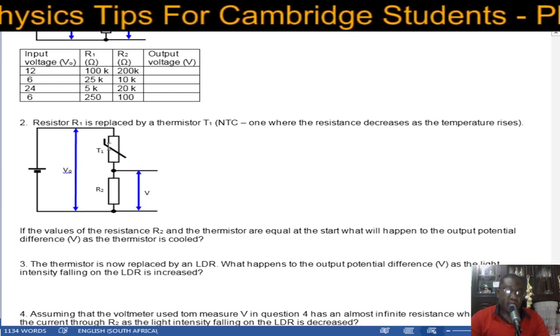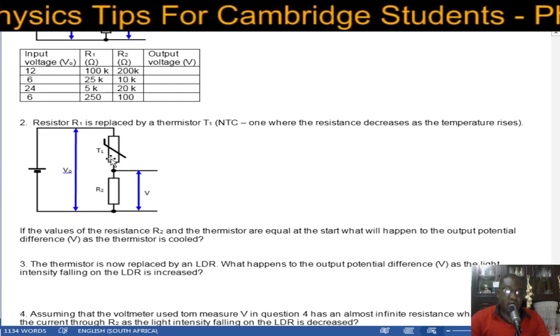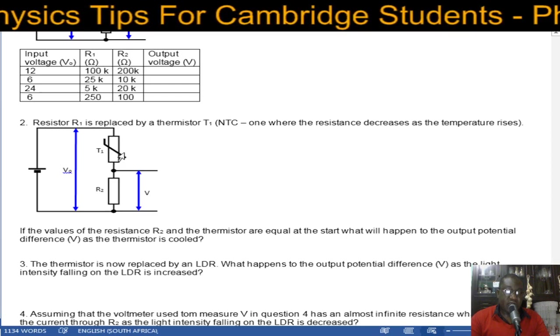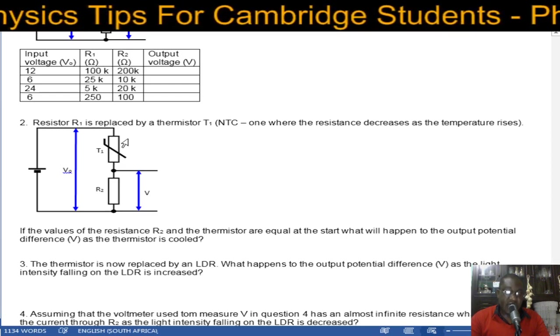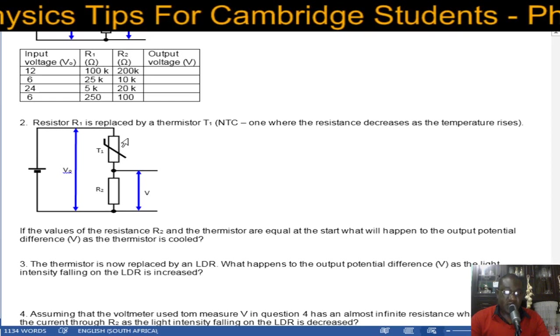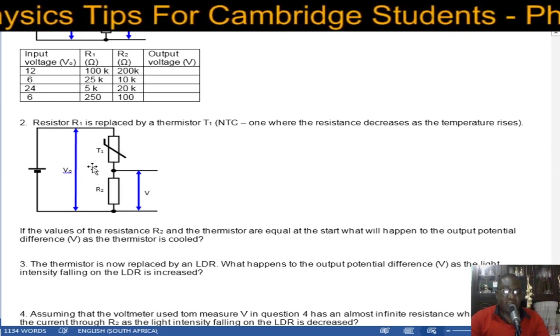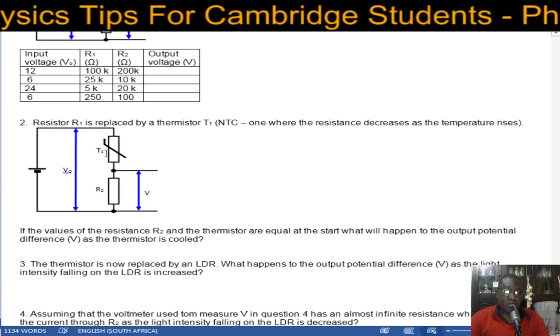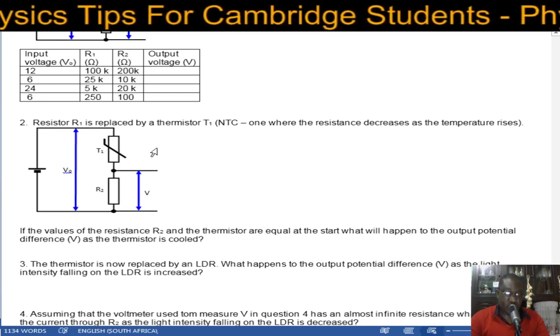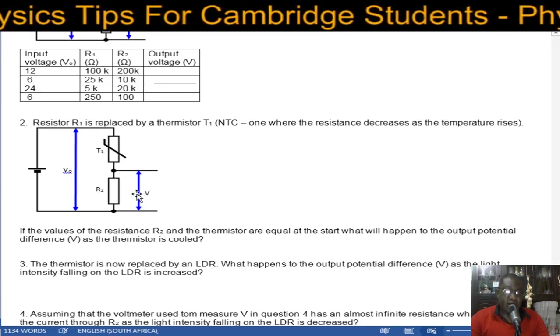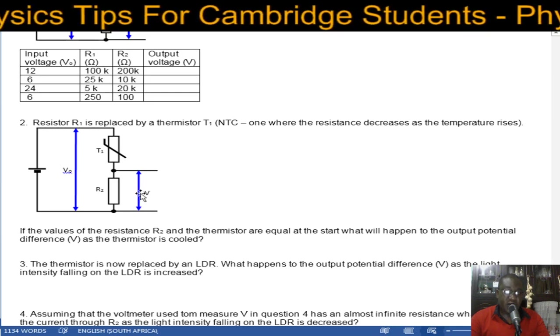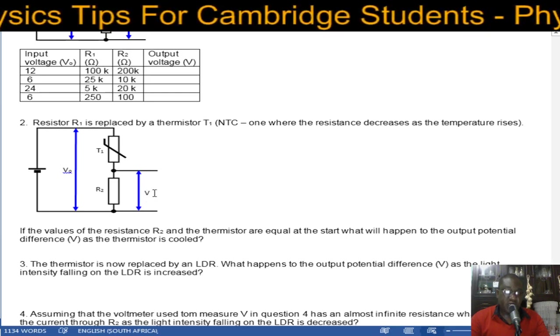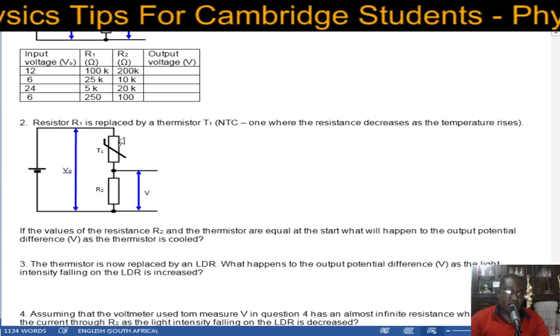As the thermistor starts cooling off, the resistance of the thermistor will start to increase. Its resistance increases as the temperature decreases. So as this resistance increases, which means the potential difference across it will start to increase as well, thereby diminishing this output voltage. So this output voltage decreases as the thermistor cools.